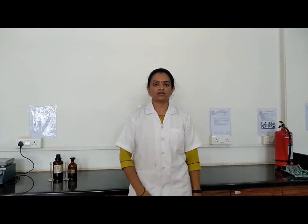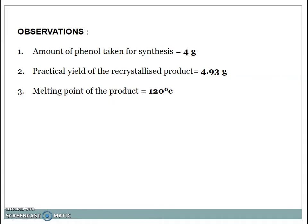The practical yield of the recrystallized compound is 4.93 grams and the melting point of the compound is 120 degrees celsius. After performing the synthesis we got some observations: Amount of phenol taken for synthesis 4 grams. Practical yield of recrystallized product 4.97 grams and the melting point of the product is 120 degrees celsius.